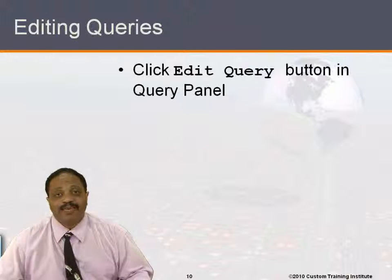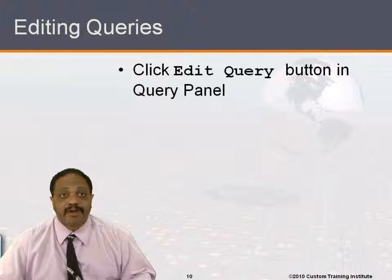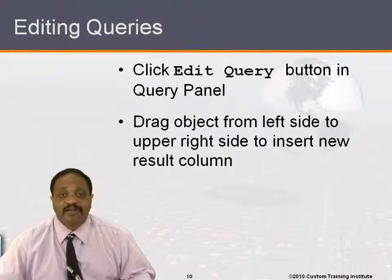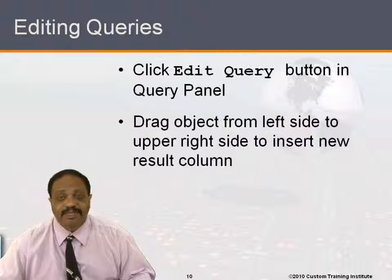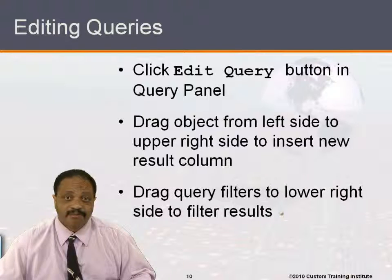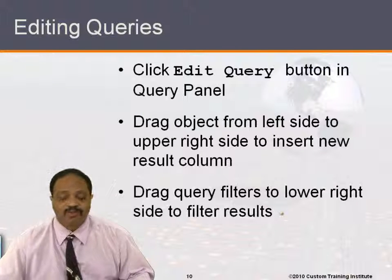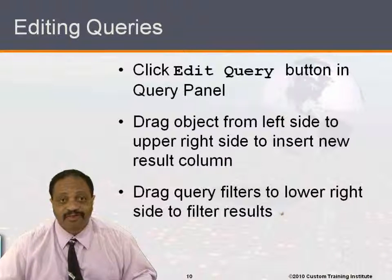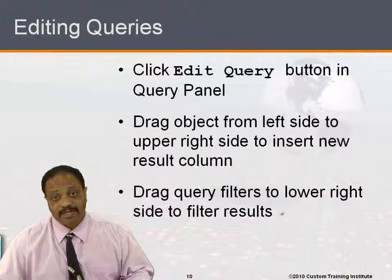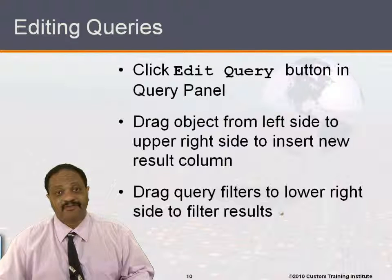The edit query button in the query panel allows us to modify an existing query. Once it is open, we can drag an object from the left side to the upper right side to insert a new result column. And as always, we can drag query filters — those little funnel icons — from the left side to the lower right side to filter the results.